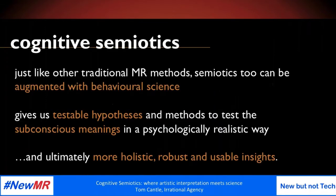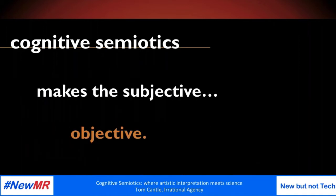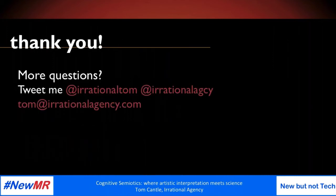So the small things make a big difference. To wrap up: behavioural science can supercharge semiotics. This is because behavioural science gives us testable hypotheses and ways to test subconscious meanings in a psychologically robust way. It allows us to understand how small changes can make a big difference and ultimately deliver more holistic, robust and usable insights through cognitive semiotics. This allows us to make the subjective objective. Thank you very much.